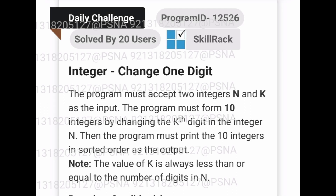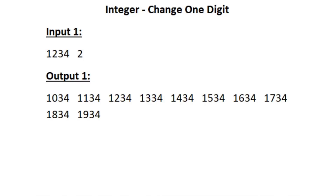This is the question asked in today's skill track daily challenge. In the first line of our input we are given two integers. The first integer is n and the second integer is k. We have to form 10 new integers by replacing the kth digit in the integer n.